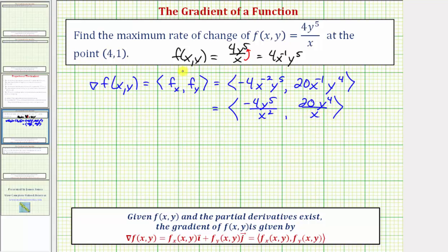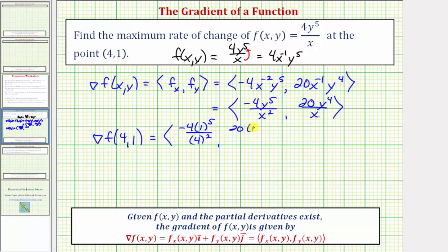Now we evaluate the gradient at the point (4,1). Substituting x = 4 and y = 1: the x-component is −4 × 1⁵ / 4² = −4/16 = −1/4, and the y-component is 20 × 1⁴ / 4 = 20/4 = 5. So the gradient at (4,1) is (−1/4, 5).